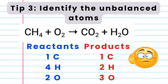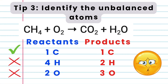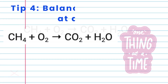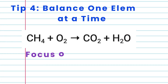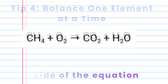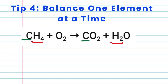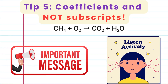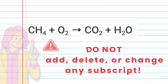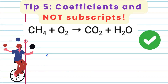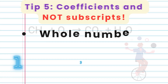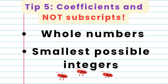Tip 3: Identify the unbalanced atoms. Carbon is balanced, but hydrogen and oxygen are unbalanced since they have different numbers on either side of the equation. Tip 4: Balance one element at a time. Focus on elements that appear only once on each side of the equation if possible. Since carbon is already balanced, let us balance hydrogen. Tip 5: Use coefficients and not subscripts. To balance, do not add, delete, or change any subscript since this changes the identity of the substance. Instead, we put coefficients in front of chemical formulas to adjust the number of atoms. Coefficients must be whole numbers and should be the smallest possible integers.